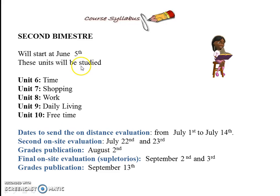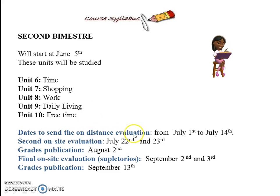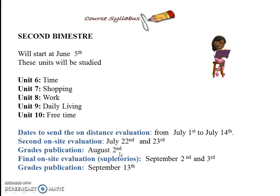The second semester starts on the 5th of June. The units cover topics including time, shopping, and work. The dates for the second distance evaluation are July 1st to July 14th. The on-site evaluation is the 22nd and 23rd, and grades are published on August 2nd. The final on-site evaluation — the supplementary exam — if you don't complete 28 points, is on September 2nd and 3rd, with grades published on the 13th.